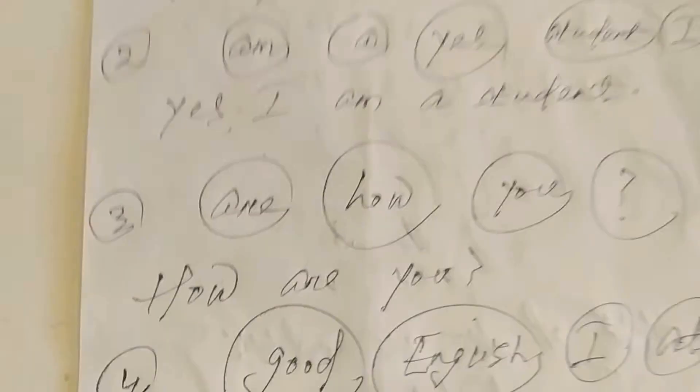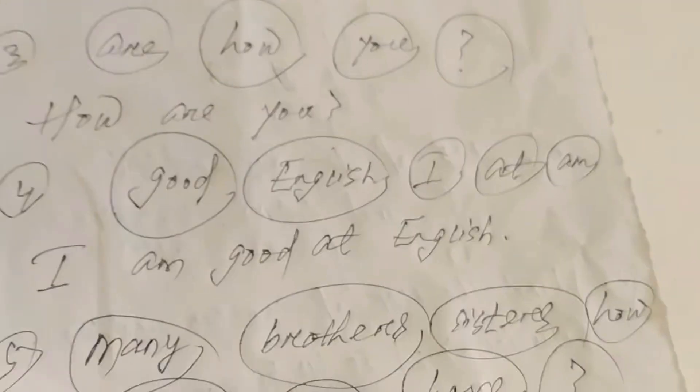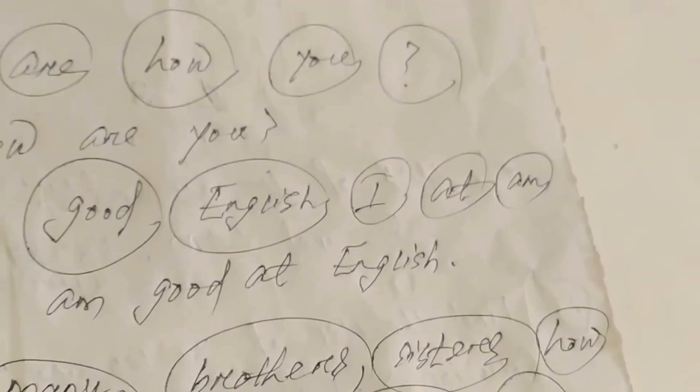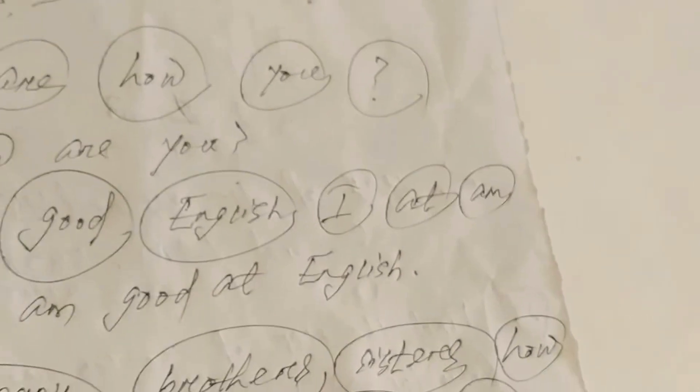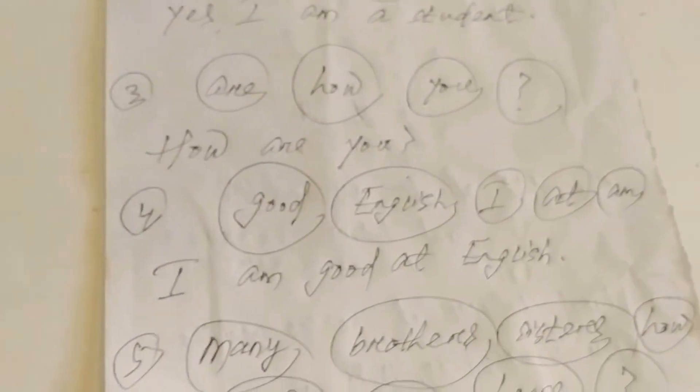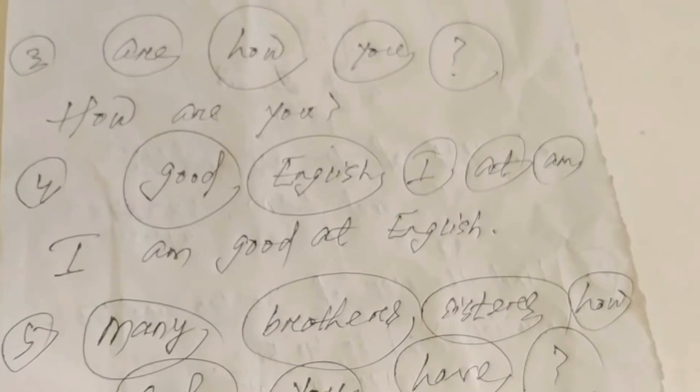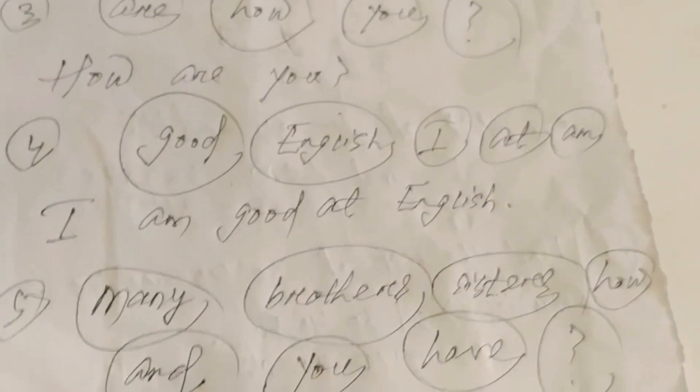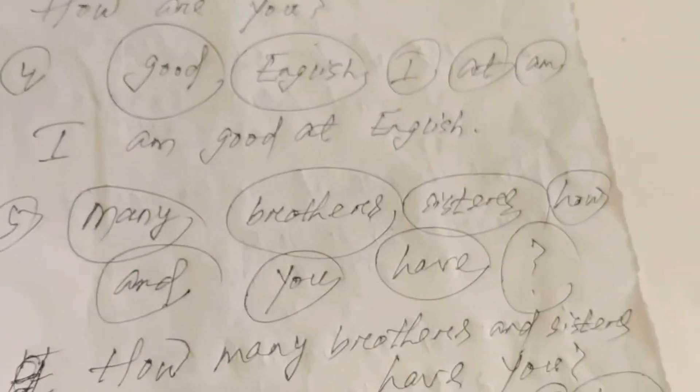Similarly, example 4: good, English, I, at, am. How can we rearrange these words to make a sentence? I am good at English. This is example 5: